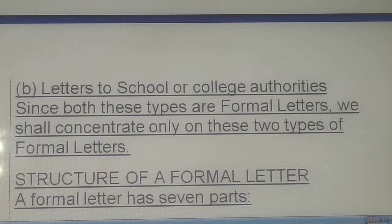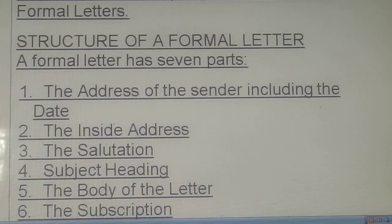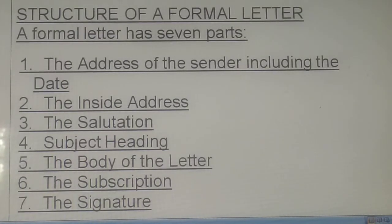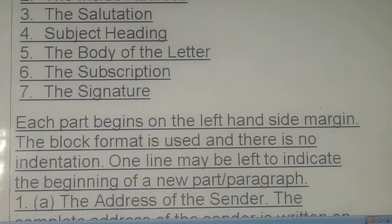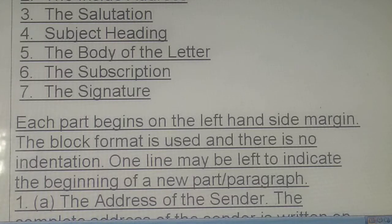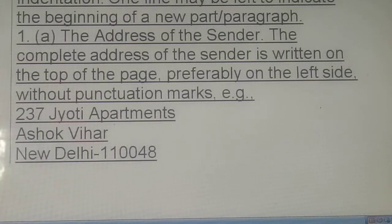Structure of a formal letter: a formal letter has seven parts — the address of the sender including the date, the inside address, the salutation, the subject heading, the body of the letter, the subscription, and the signature. Each part begins on the left-hand side margin. The block format is used and there is no indentation. One line may be left to indicate the beginning of a new part or paragraph.